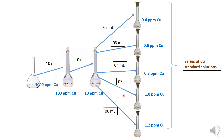For example, if we want to dilute from 10 ppm to 0.4 ppm, we take 2 mL from the 100 mL flask containing the 10 ppm copper solution and add it to a 50 mL flask. For this series of standard copper solutions we are using a 50 mL flask, so V₂ = 50 mL, C₂ = 0.4 ppm, C₁ = 10 ppm, and V₁ = 2 mL — calculated through C₁V₁ = C₂V₂.